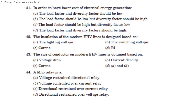Now we have 40 questions — question 41. In order to have a lower cost of electrical energy generation: Option A — load factor and diversity factor should be low; Option B — load factor should be low but diversity factor should be high; Option C — load factor should be high but diversity factor low; Option D — load factor and diversity factor should be high. The answer is Option D.